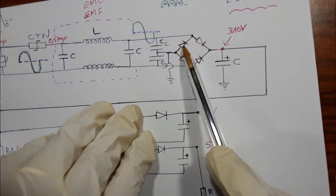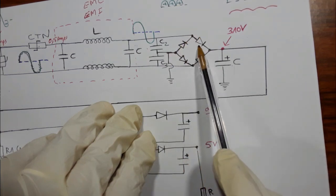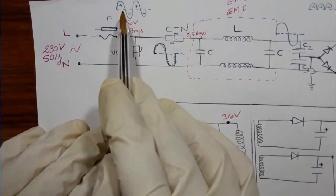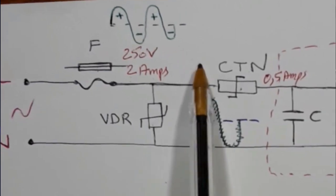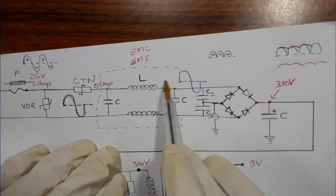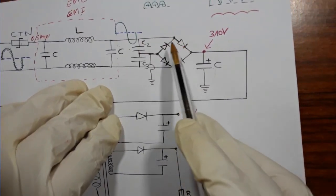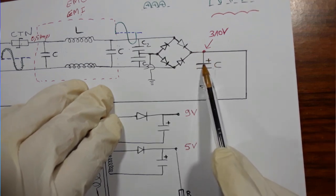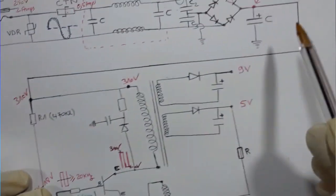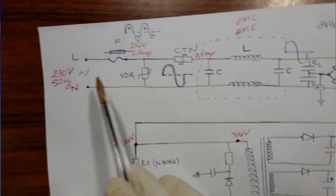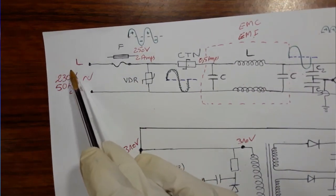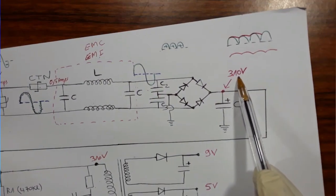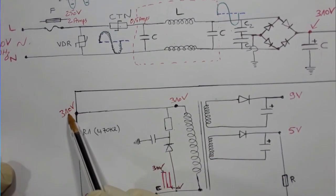Here we have the rectifier with four diodes. This rectifier will rectify the AC signal — which has plus and minus cycles — into a signal with only the positive part. When this signal is then applied to the filtering capacitor, we get an almost continuous DC signal. Normally from 220V AC input, after passing through all these components we will get 310 volts DC.